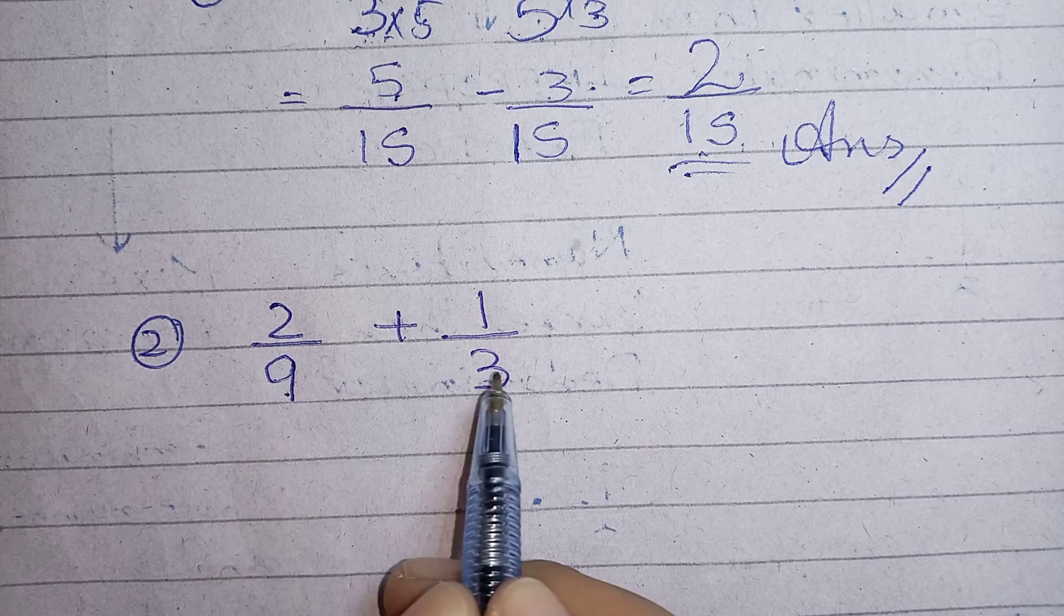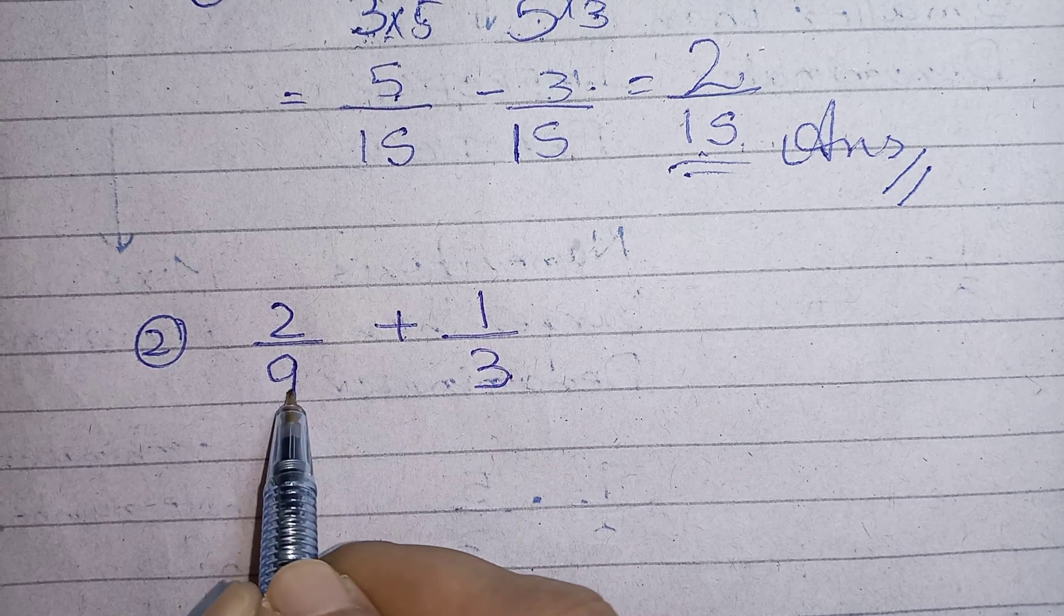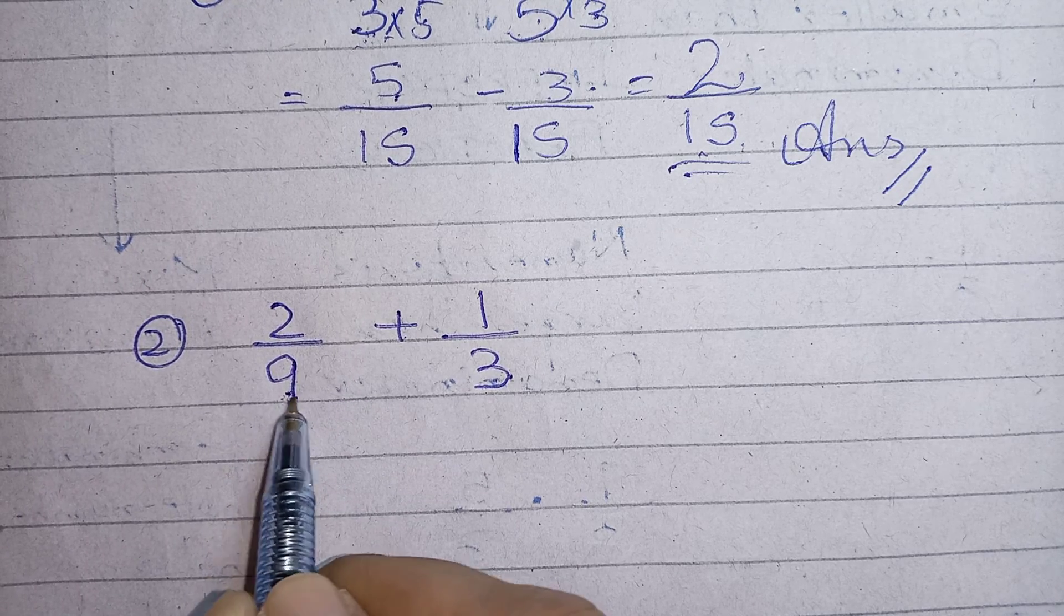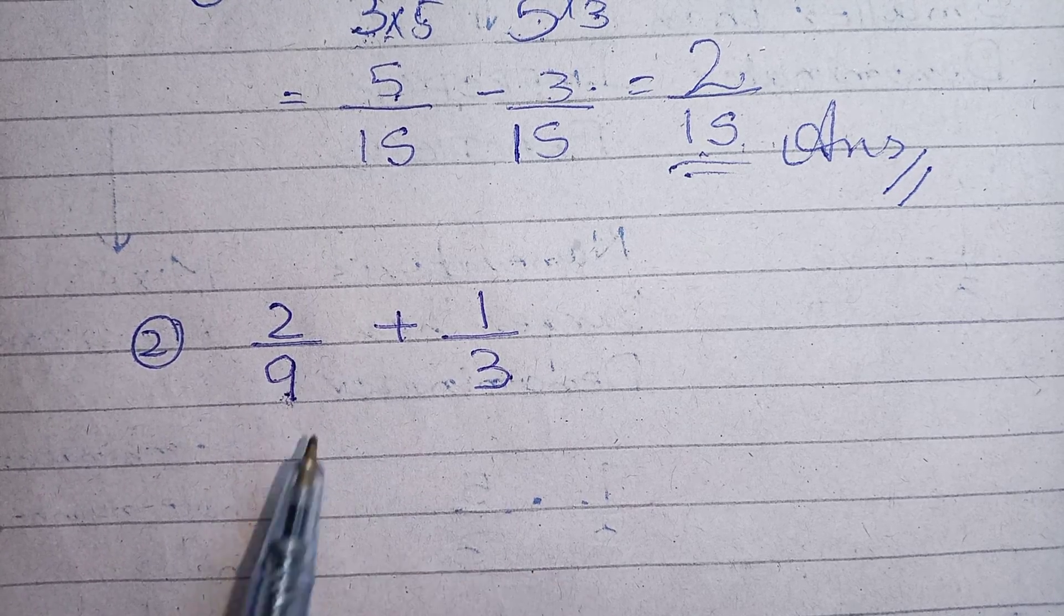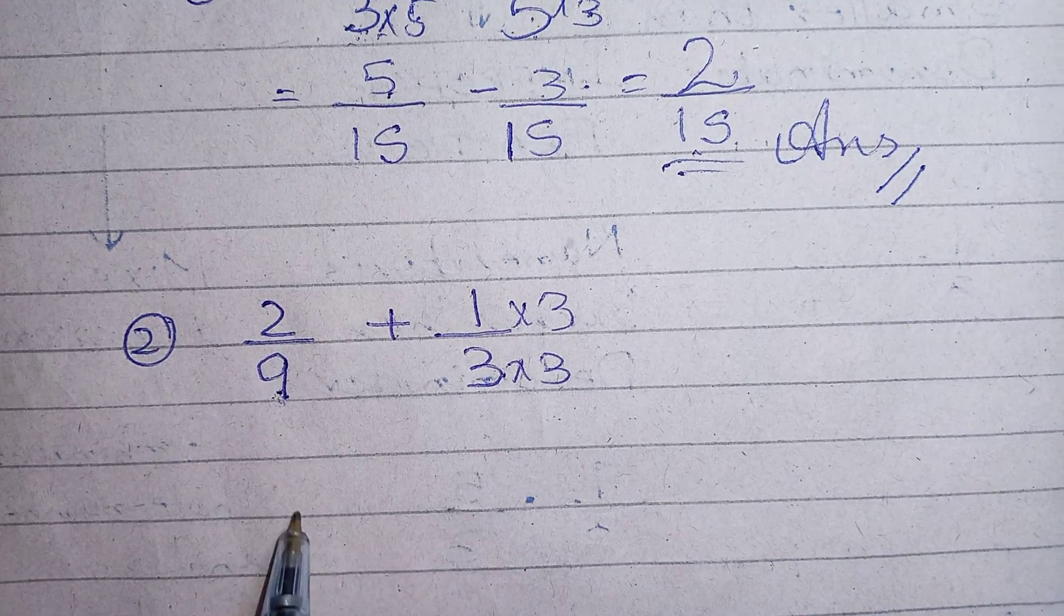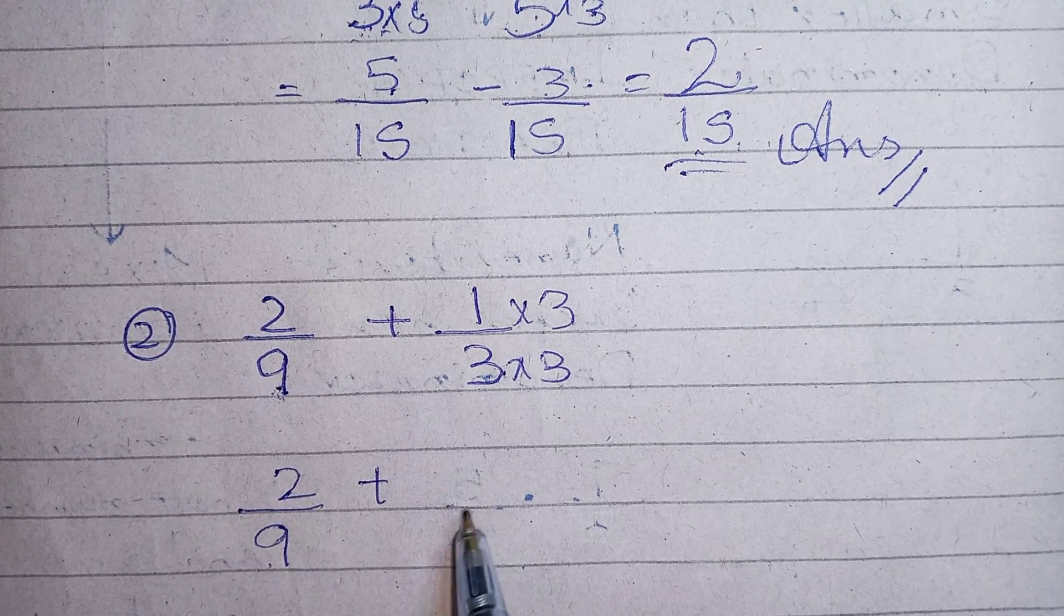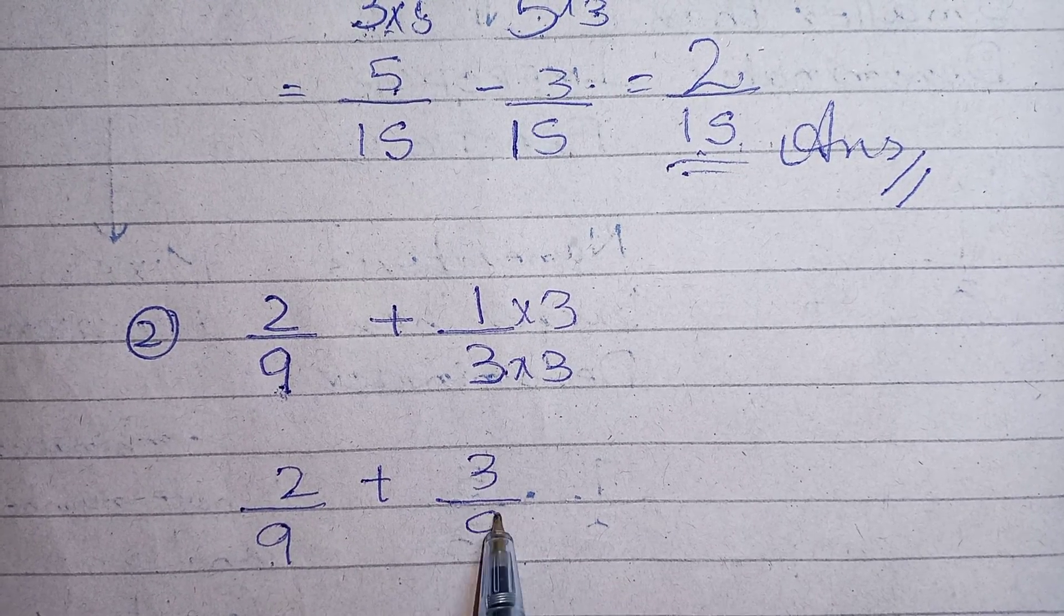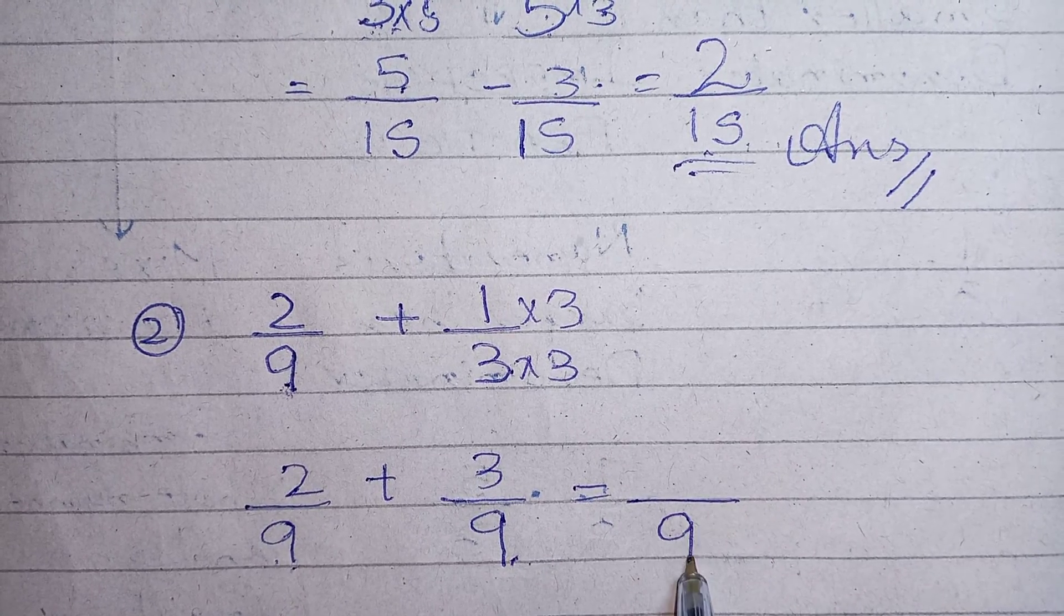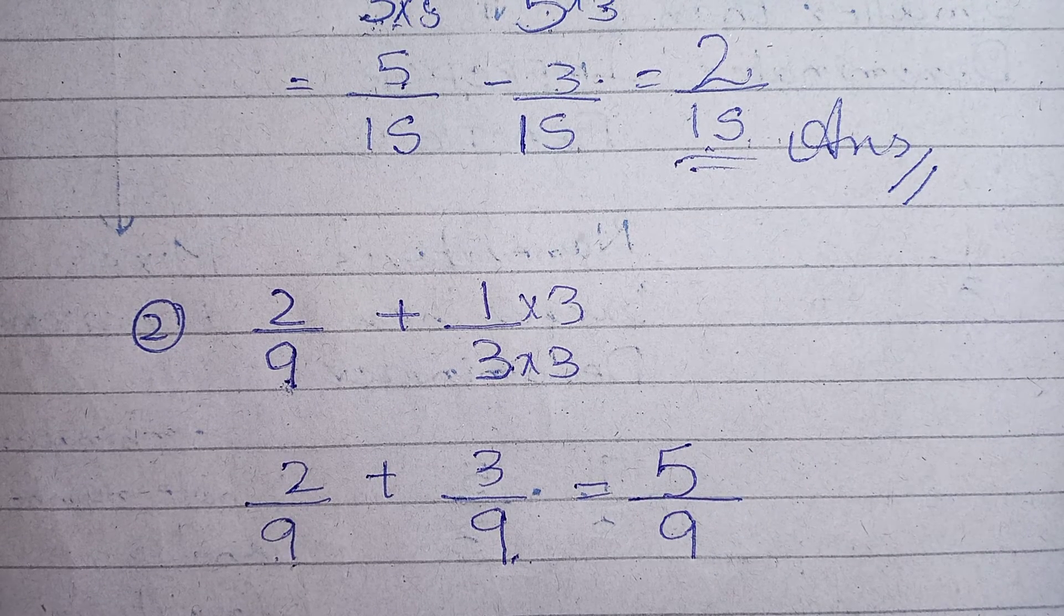This is the last question for today. Now over here 9 and 3. I can have in the table of 3, 9. So there will be no change in the denominator of 2 over 9. Just multiply 3 and 3 over here and write it down. 2 over 9 plus 3 over 9.